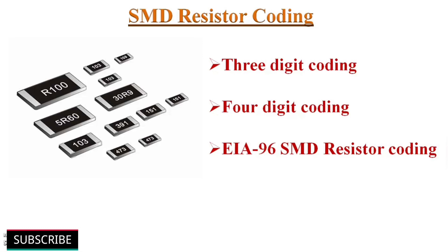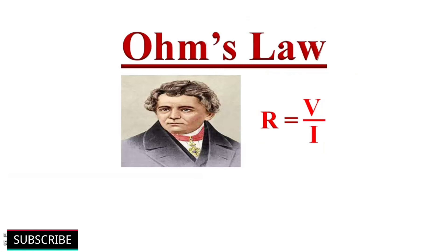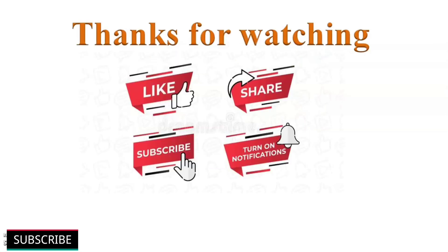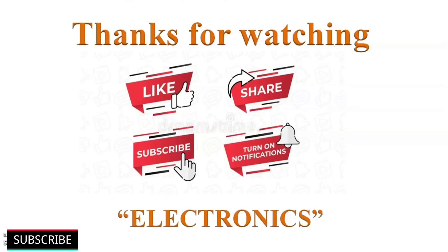That's all about the SMD resistor coding system. I hope in this video you have learned how to find the resistance value of surface mount resistors from the code written on them. If you like this video, please mention it in the comment section below. In my next video, we will discuss Ohm's Law — the relationship between resistance, voltage, and current. Thanks for watching. Please click the like button, share this video to help others learn, and subscribe to the channel and turn on notifications for more such videos. Have a nice day.